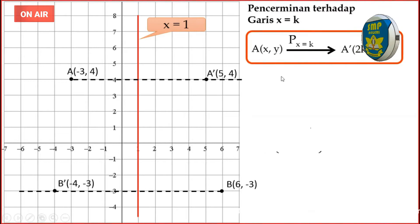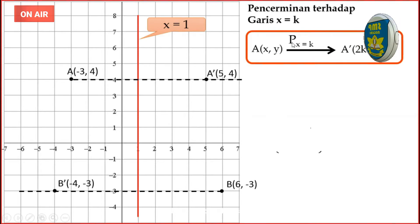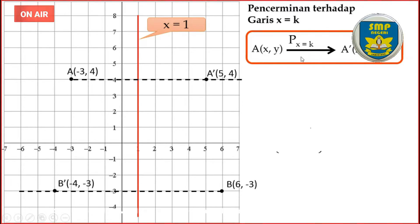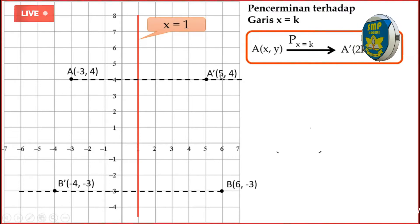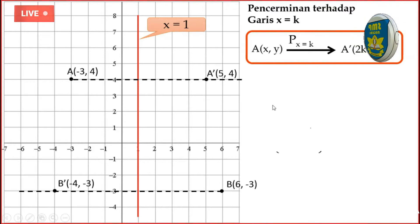Ini rumusnya: titik A(X,Y) dicerminkan terhadap X sama dengan K. A aksennya adalah (2K dikurang X, Y). K-nya tadi 1, berarti 2 kali 1 sama dengan 2, dikurangi X. Contoh: tentukan bayangan titik C(7,5) jika dicerminkan terhadap garis X sama dengan 3. K-nya sama dengan 3. Gunakan rumus: 2K dikurang X = 2×3 - 7 = 6 - 7 = negatif 1. Y-nya tetap 5. Jadi bayangan titik C(7,5) adalah C aksen(-1, 5).